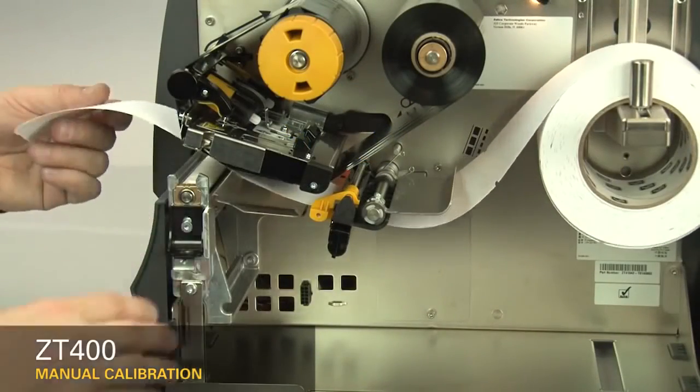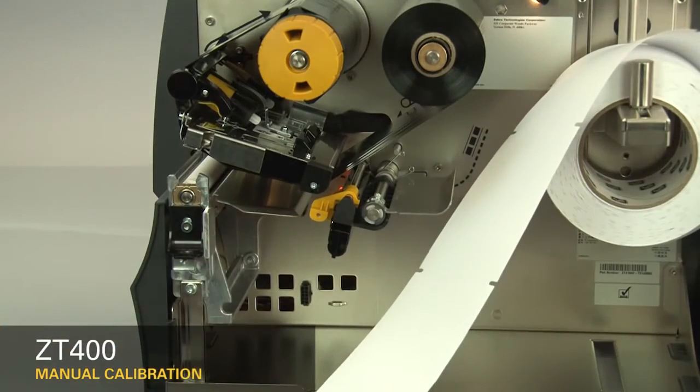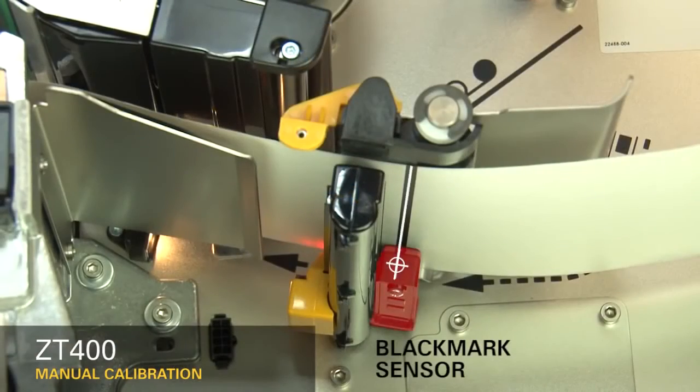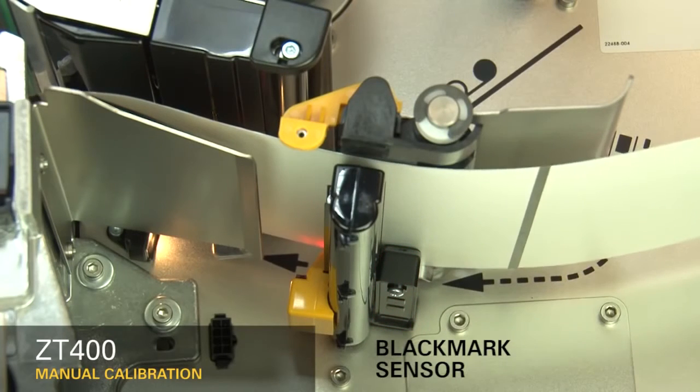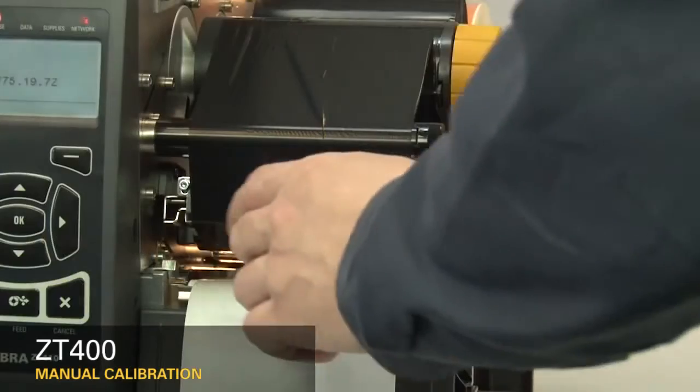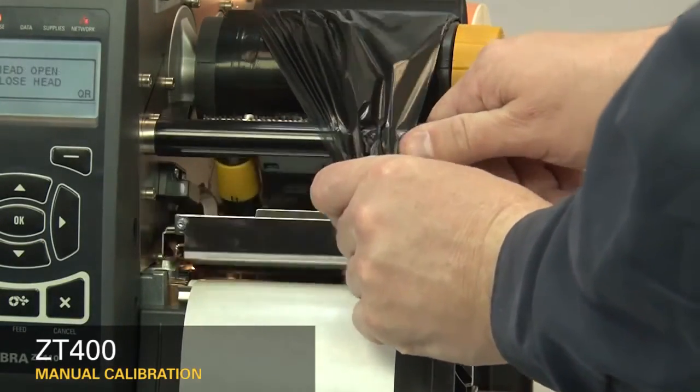If your media has holes or notches, or is a continuous roll with no start position features, remove the media entirely. If your media has a black mark on the underside of the media, please ensure the black mark is not under the mark sensor. If you're using ribbon, the ribbon must be removed from the ribbon sensor location on the inboard side of the printer.